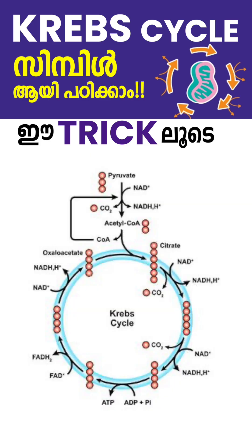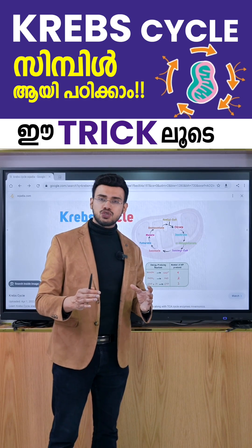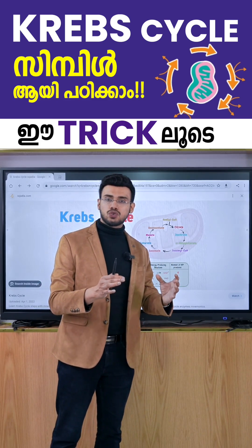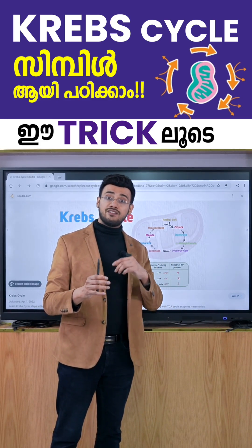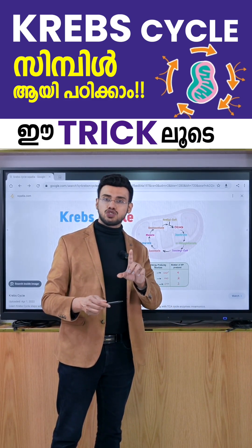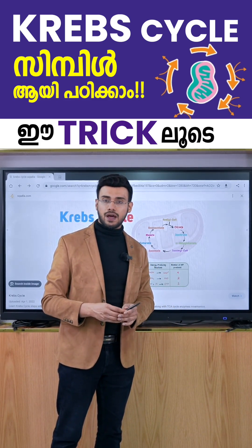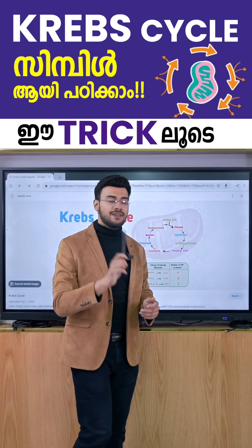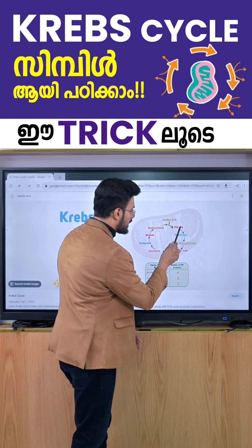How many ATP molecules are produced? 36 ATP molecules. The electron carriers involved are NADH2 and FADH2, which feed into the electron transport chain.